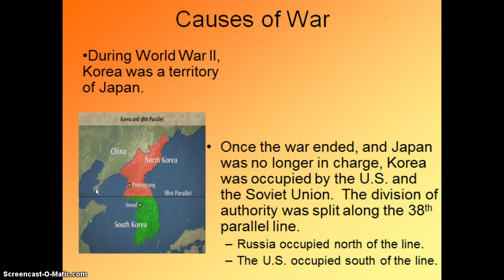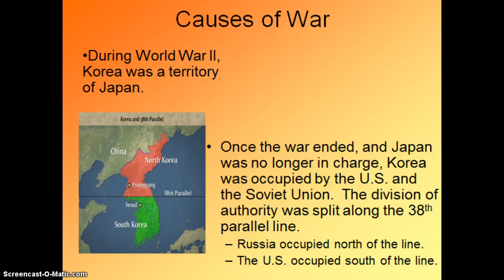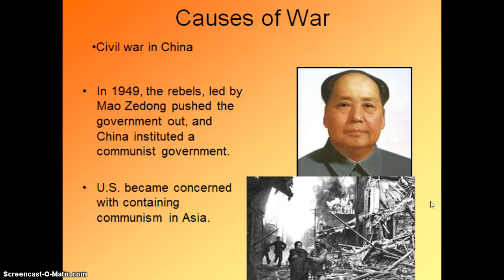The U.S. occupies the south and the Soviet Union occupies the north. At the same time, we have a civil war in China. China previously had an emperor — basically a kingdom or empire set up. In 1949, there is a communist revolution led by Mao Zedong. Mao Zedong pushes the government out, and China basically has a communist government, but it is not a peaceful revolution. You can see the damage that Mao Zedong does — he completely destroys parts of China. He is not as deadly as Stalin, but he is close, killing millions of his own people in the process of becoming communist.